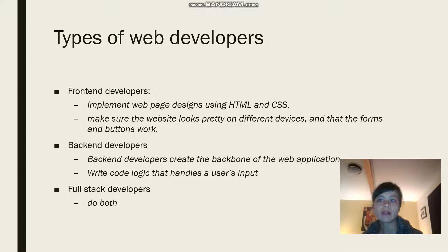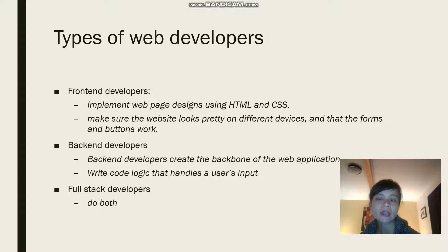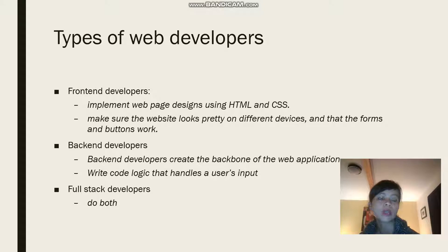There are many types of web developers, but there are three main categories. First, we have the front-end developer. Front-end developers are the ones who implement web page designs using HTML and CSS. They make sure the website looks pretty on different devices and that the forms and buttons work, amongst many other tasks.